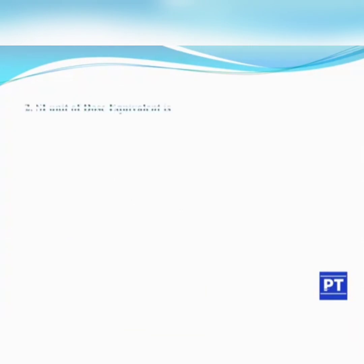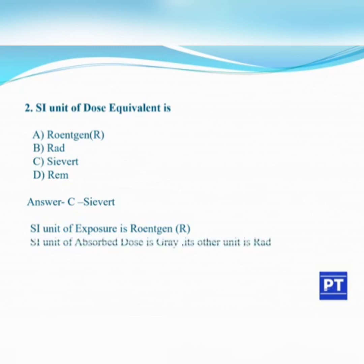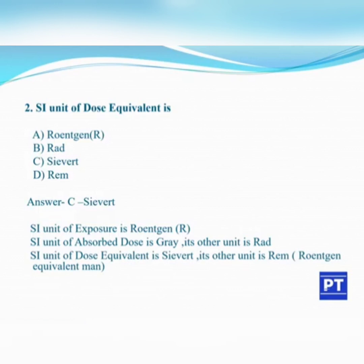Second question: the unit of dose equivalent is? A. Röntgen R, B. Rad, C. Sievert, D. Rem. The answer is C, Sievert. The SI unit of exposure is Röntgen R. The SI unit of absorbed dose is Gray, and its other unit is Rad. The SI unit of dose equivalent is Sievert, and its other unit is Rem — Röntgen equivalent man.